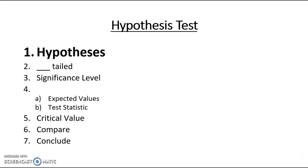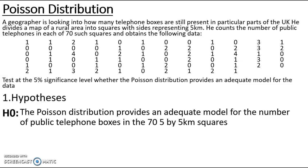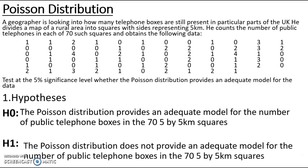First of all we're going to look at our hypotheses. As with all goodness of fit test examples, H0 is that the stated distribution, so in this case the Poisson distribution, provides an adequate model for the number of public telephone boxes in the 75 by 5km squares. H1, as with all our other ones, is that it does not provide an adequate model.